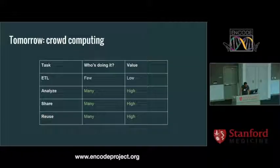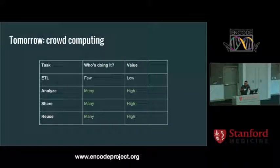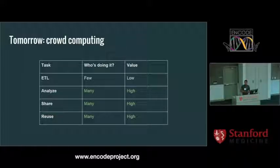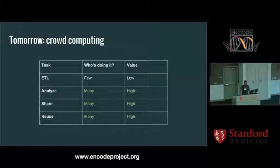It's easy to imagine a different world with a crowd computing model. The idea is that we match both computational and human bandwidth with the value of the task — you do your Extract Transform Load once, then use as many brains as possible to do analysis, with high sharing and high reuse. This is what science is all about: standing on the shoulders of giants. But if you can't see those shoulders, or they're caught in a two-year pre-publication review cycle, you really don't have anything to stand on.